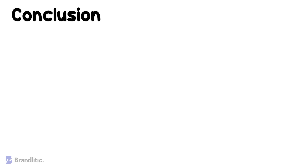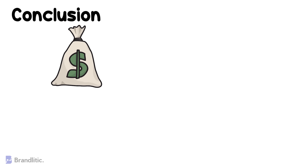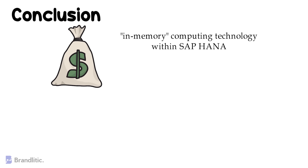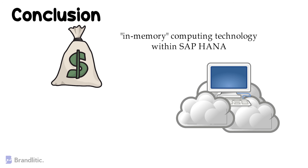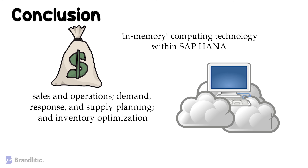As a conclusion, SAP IBP can fulfill future demand profitability with real-time supply chain management. It is powered by in-memory computing technology with SAP HANA, which empowers this cloud-based solution with the capabilities of sales and operations, demand, response and supply planning, and inventory optimization in support of your company's integrated business strategy.